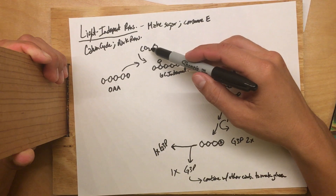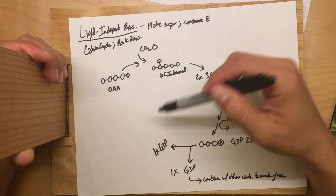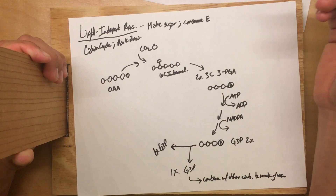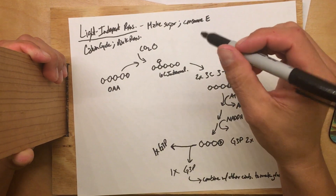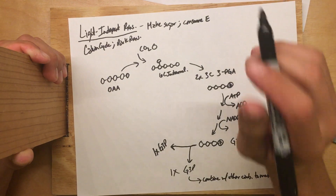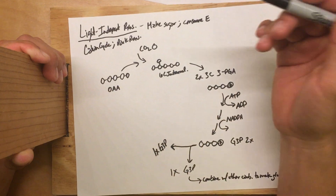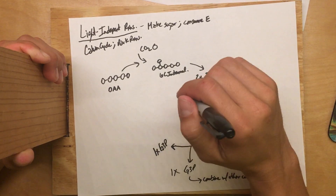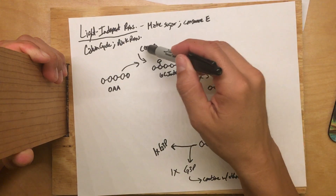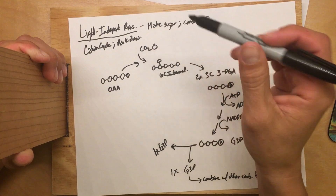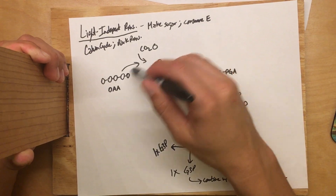We need to go from one three-carbon G3P back to one five-carbon OAA. You might say: up here we added a CO2 — that was one carbon — so why don't we just do that two more times? But it's not as easy as that. The step where we add the CO2 uses an enzyme named rubisco. Rubisco is very special — it's the key protein in photosynthesis that can take something inorganic, inert CO2, and make it part of a carbohydrate.